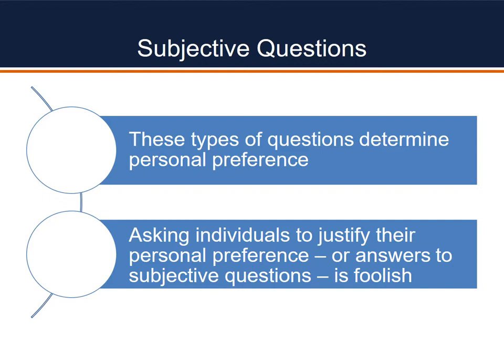Our first type of framing question that Morgan puts in his introduction is subjective questions. We ask these questions all the time, almost on a daily basis. They help us determine personal preference. So for example, if someone asks me what is your favorite flavor of ice cream — well, that's easy for me, it's cookie dough. However, asking me to justify my personal preference is silly. If someone says to me, why is cookie dough your favorite? I don't know, because I like it. It's the same as asking you to justify why red is your favorite color. These types of questions are indeed to get at personal preference, and asking someone to justify their response to these questions is silly and foolish.